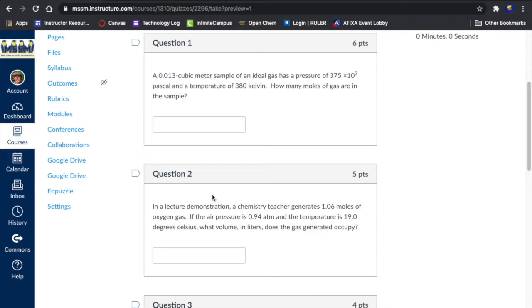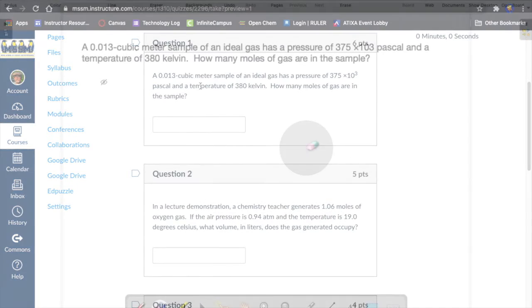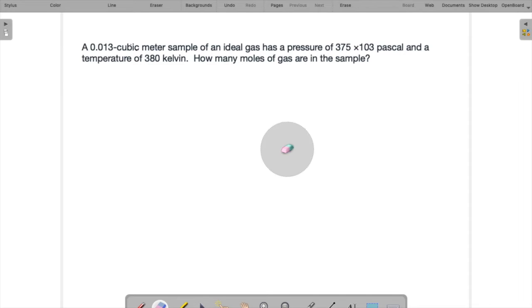0.13 cubic meter sample of an ideal gas. We're given a volume, 375 times 10 to the 3rd Pascal, that's a pressure. Temperature of 380 Kelvin. We want to know the number of moles. So that's a matter of using the ideal gas equation of state. So we're trying to find the number of moles. So since it's an ideal gas, we have PV equals nRT.